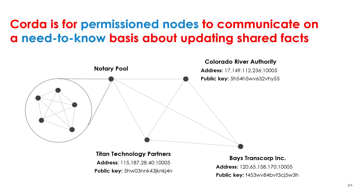All of the nodes can use the network map service to transact with all known counterparties using private, point-to-point encrypted messaging. Here we have our Quarta network, and we can see a notary pool. Looking at one of these nodes — Titan Technology Partners — we can see the legal name, the address, and the public key. This node is now available to conduct private transactions with Bayes Transcorp and the Colorado River Authority.